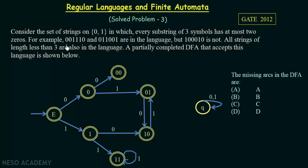For example, in the string 001110, if I take any combination of three consecutive symbols: the first three symbols are 001 — only two zeros. The second, third, and fourth symbols give 011 — only one zero. The last three symbols are 110 — only one zero. However I make the combinations, a substring of three symbols will have at most two zeros. So this string is accepted and is part of the language.